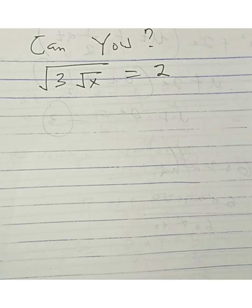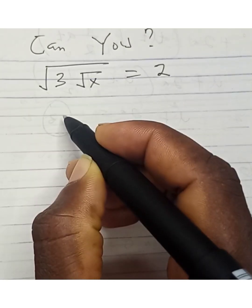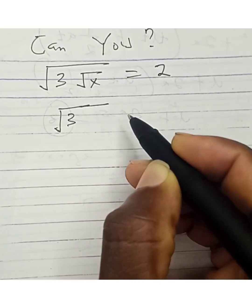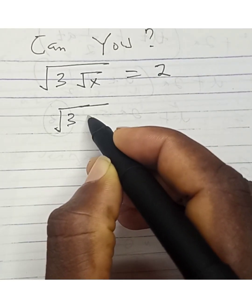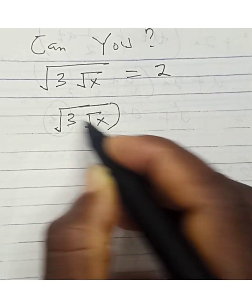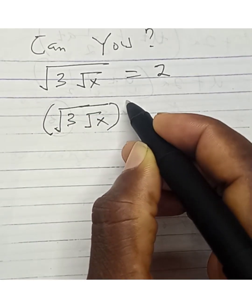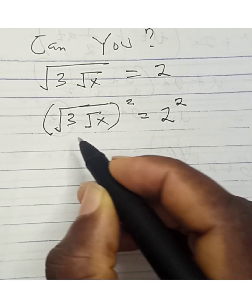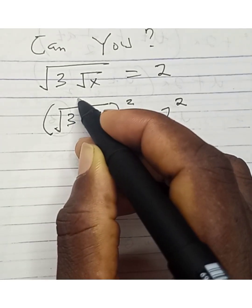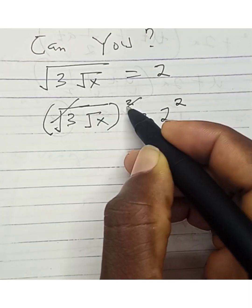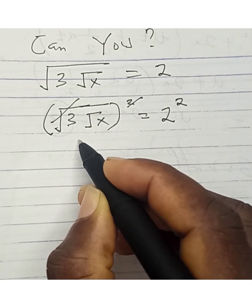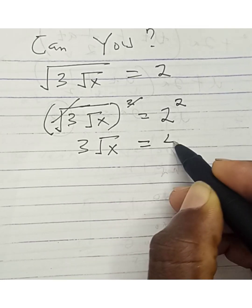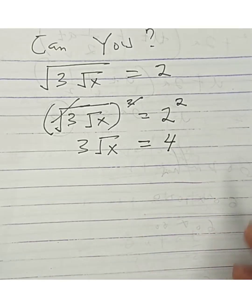We can square both sides. Squaring both sides, we have: the square root of 3 times the square root of x, squared, equals 2 raised to the power of 2. So the square roots cancel, leaving 3√x equals 4, since 2 times 2 is 4.